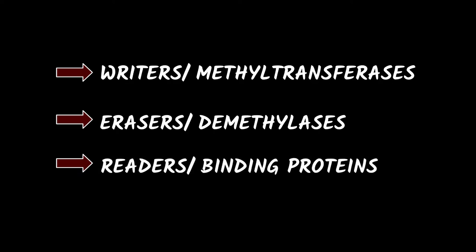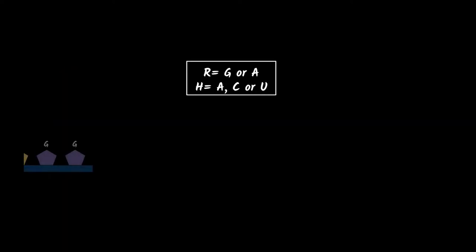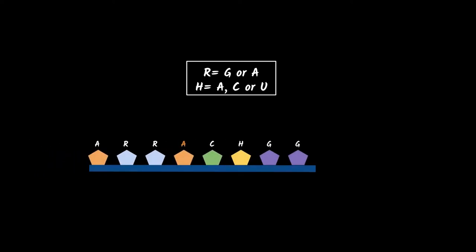We find writers, erasers and readers that act as effectors. M6A occurs in highly conserved regions with this consensus sequence.